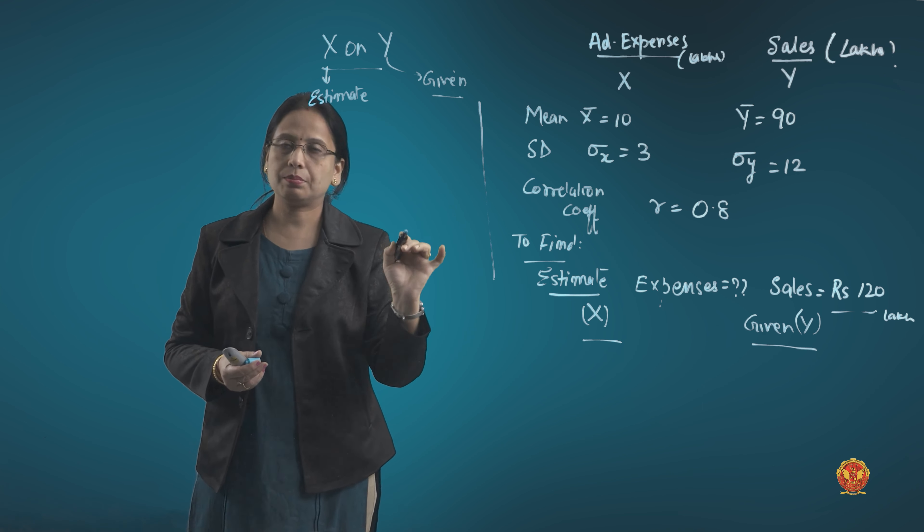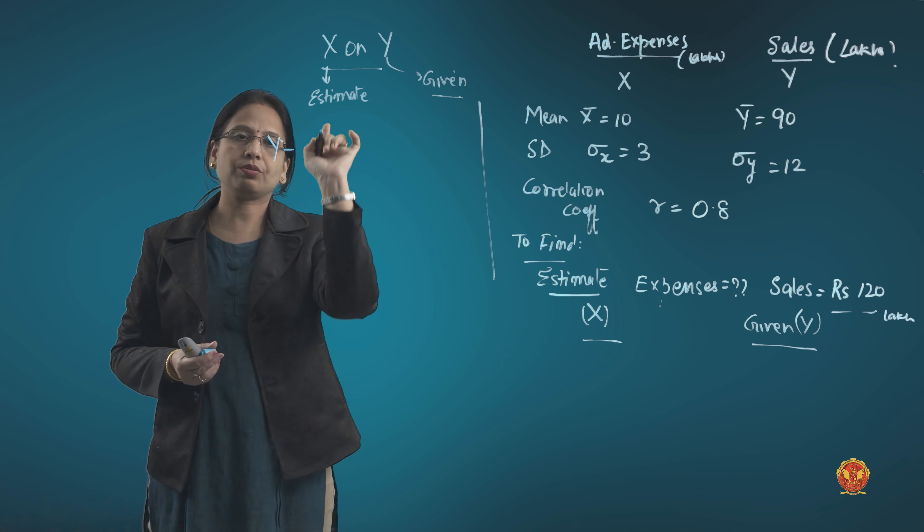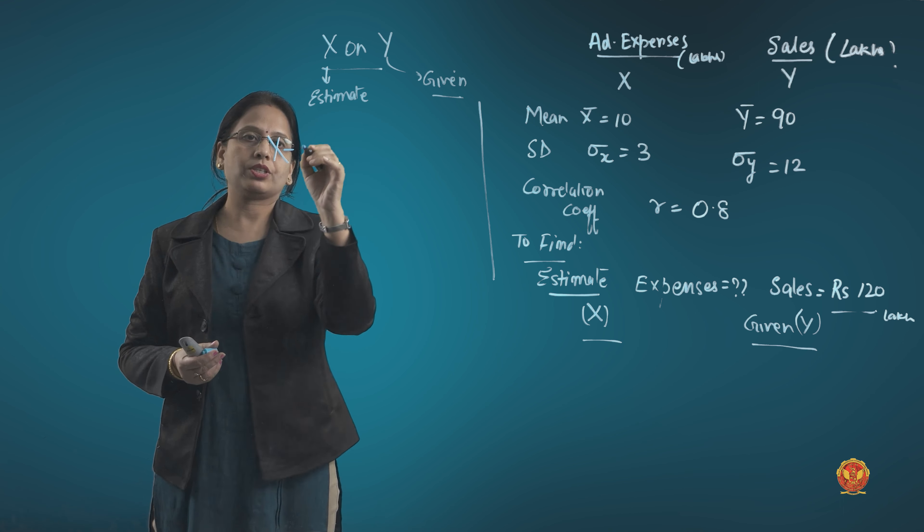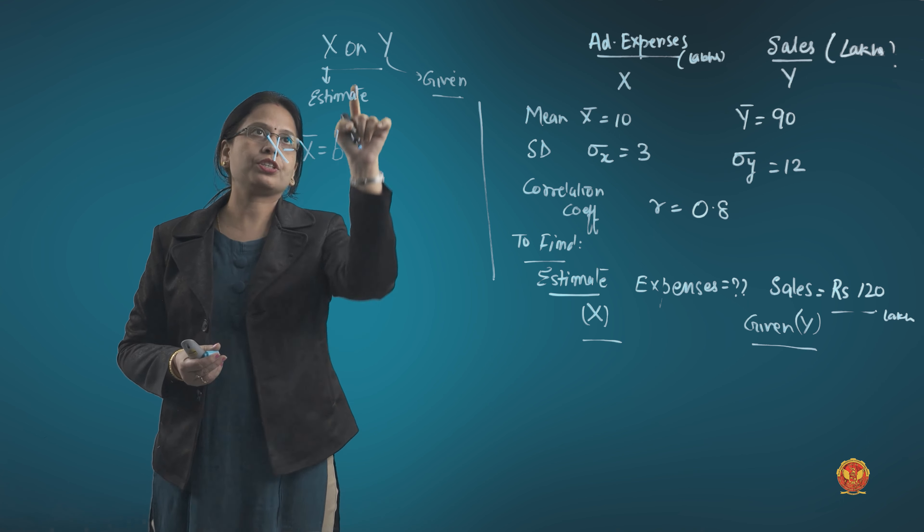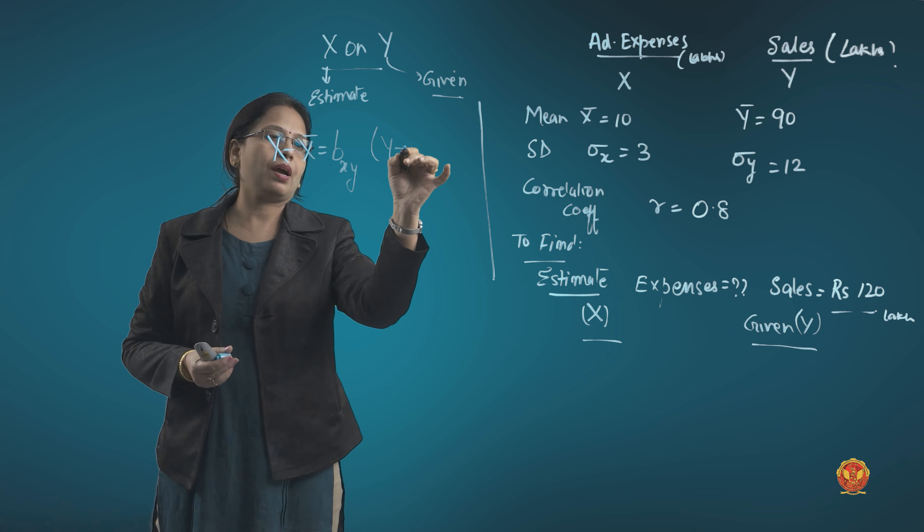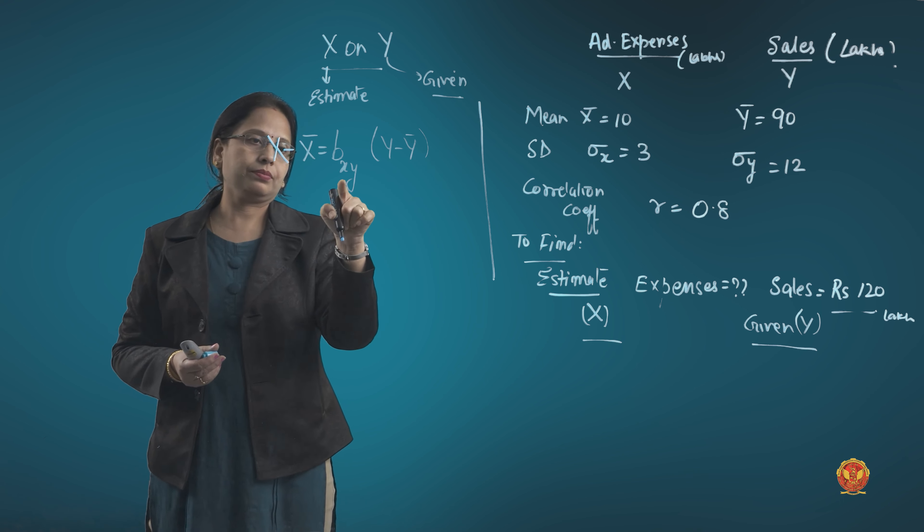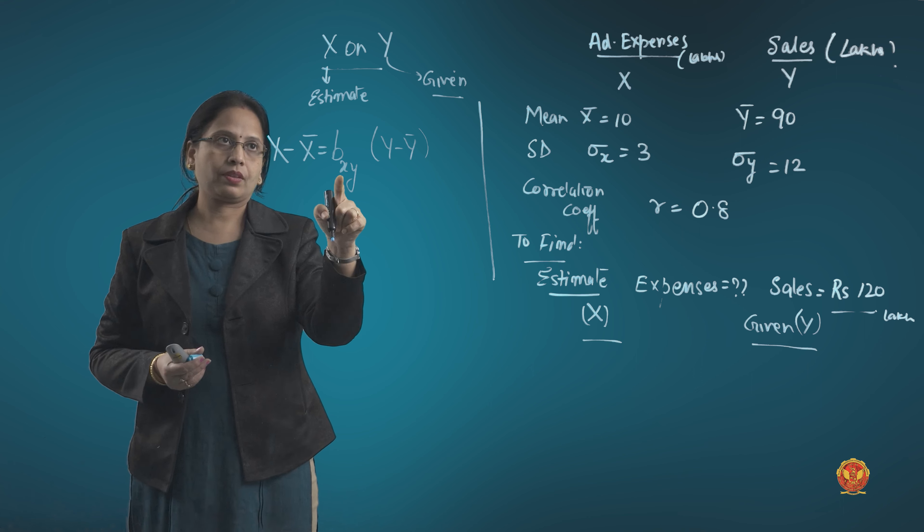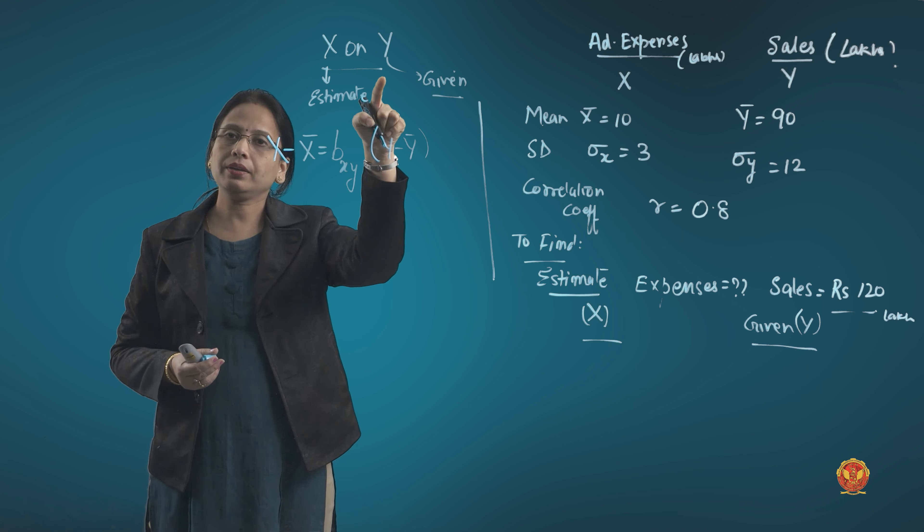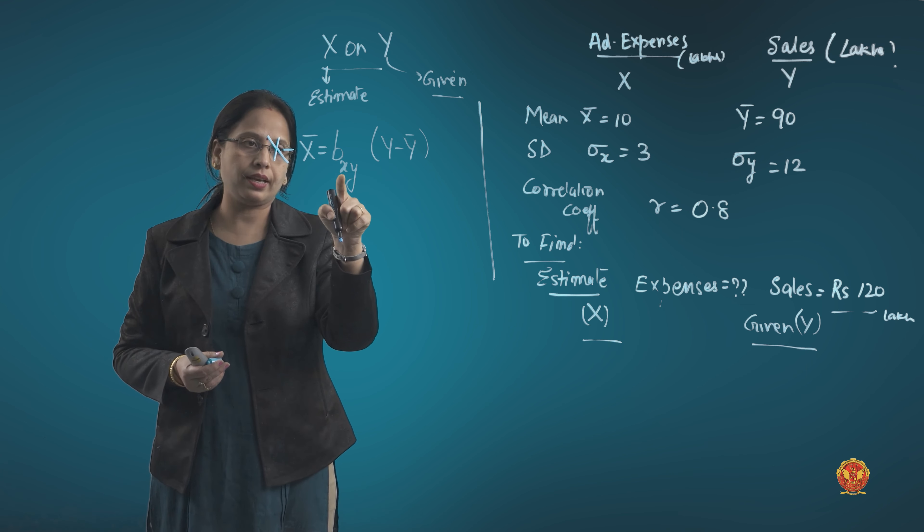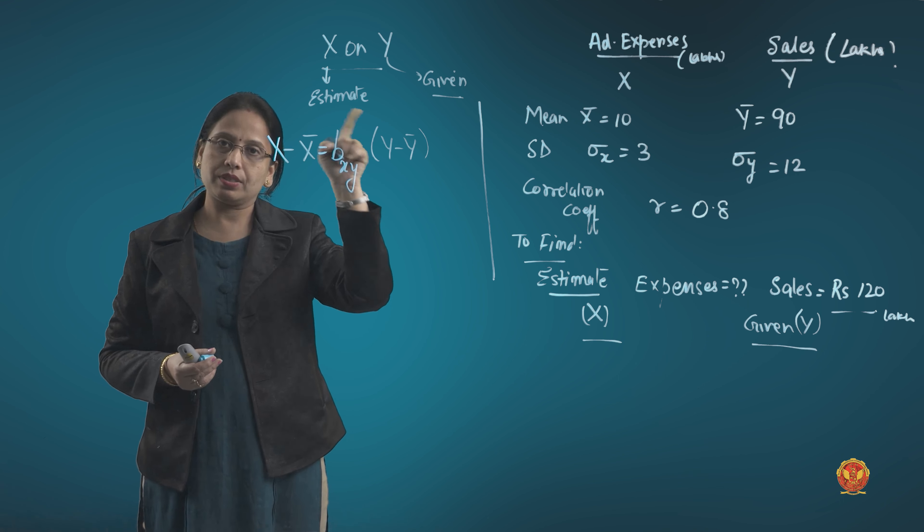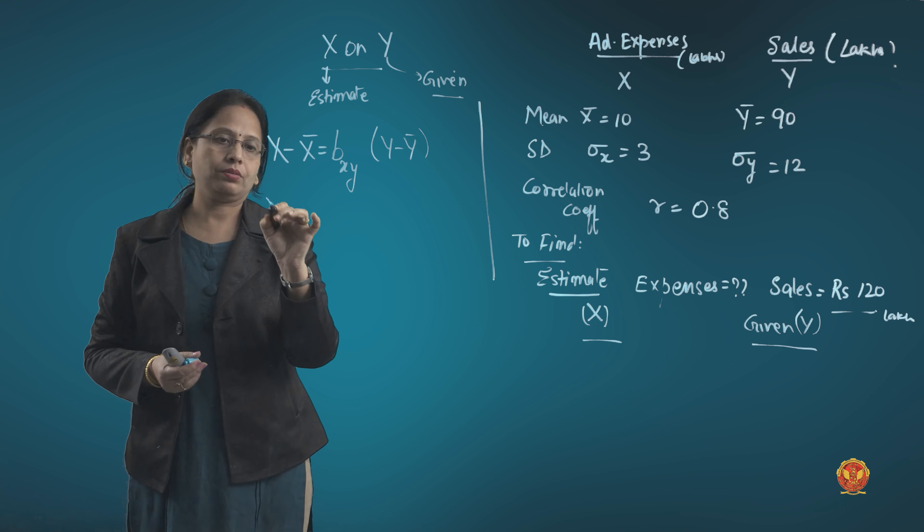It's the same, simple. Put the equation first: x on y equation. X minus x mean equals the regression coefficient of x and y, so it becomes bxy times y minus y mean. Note here, when I use x on y equation, I always write x as a subscript in the front and y at the back, and vice versa in the other case.